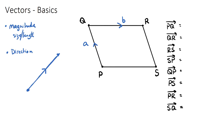If you have looked at speed and distance, a distance is just some arbitrary length and speed is just how quickly you travel. But velocity and displacement are actually vectors. If you have done physics or kinematics, velocity is a speed but in a direction, and displacement is a length but in a direction. So vectors are very important.